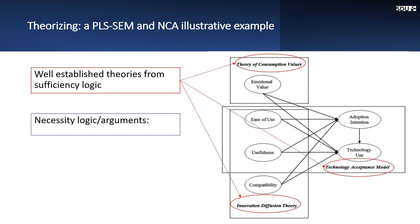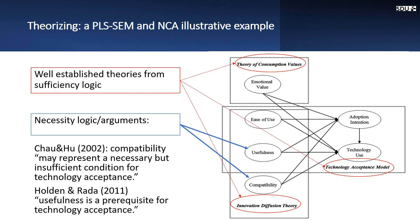What about the necessity logic? As we mentioned in the previous video, there aren't a lot of well-established theories that are already talking about necessity logic. But there are some necessity-like arguments. For example, here, the usefulness and compatibility. Compatibility may represent a necessary but insufficient condition for technology acceptance. And usefulness is a prerequisite for technology acceptance.